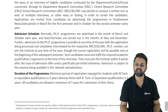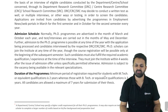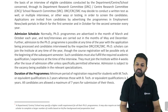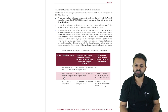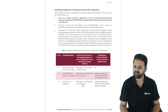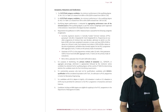The minimum period of registration required for students with M.Tech is two years, and with B.Tech or equivalent qualification is three years. All candidates are allowed a maximum of seven years for submission of their thesis. The minimum qualification required for full-time PhD is an M.Tech degree with 60% marks or a CGPA of 8.6. For M.Sc or MBA that is also specified. For B.E. or B.Tech with 70% marks, if you have also qualified GATE, CSIR-UGC NET, or DST INSPIRE Fellowship, you can also apply for PhD.